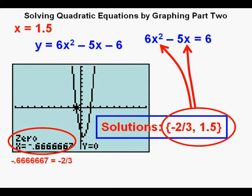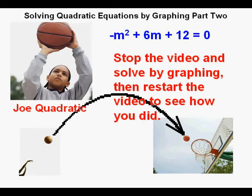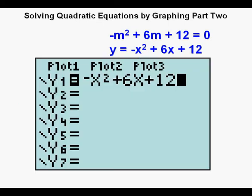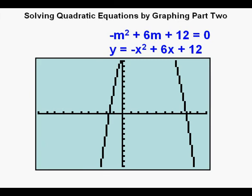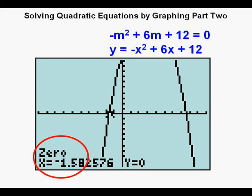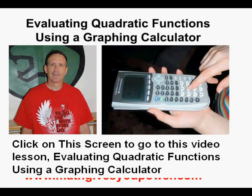Now let's look at this quadratic equation: negative m squared plus 6m plus 12 equals zero. Stop the video and find the solutions by graphing; restart to see how you did. The quadratic function is y equals negative x squared plus 6x plus 12. Here is the function entered in the y equals view and graphed in the standard window. The solution on the right side of the parabola is approximately 7.58, and the solution on the left side is approximately negative 1.58. For more detailed instruction on using the calc menu, see Evaluating Quadratic Functions Using a Graphing Calculator.